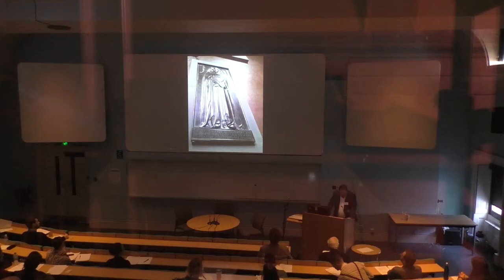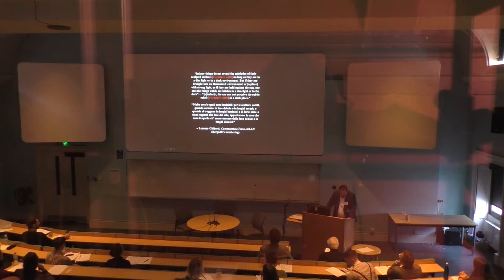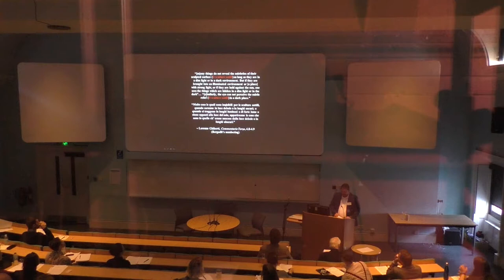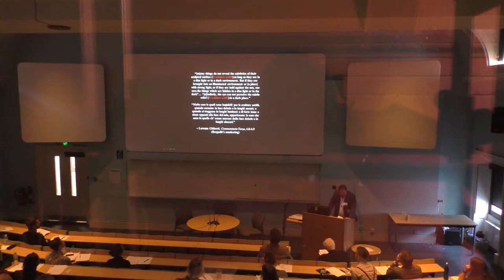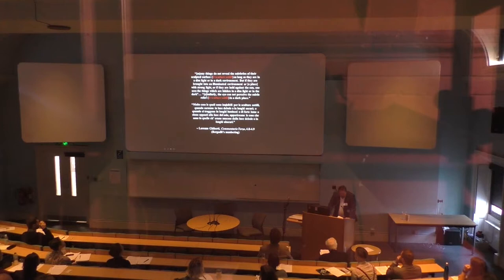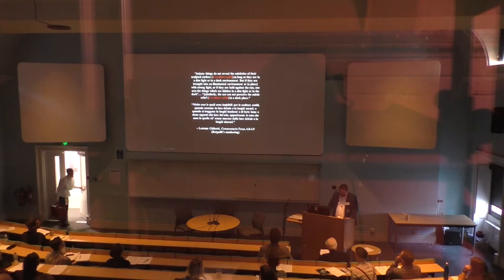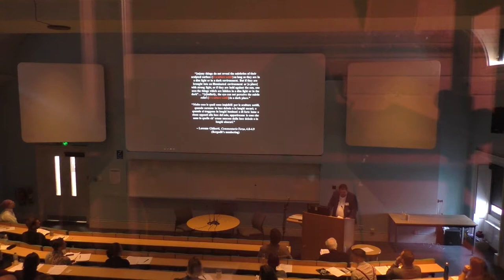For example, Ghiberti claims: 'Many things do not reveal the subtleties of their sculpted surface as long as they are in a dim light or in a dark environment. But if they are brought into an illuminated environment or a place with strong light, or if they are held against the sun, one sees the things which are hidden in the dim light or in the dark.' And similarly: 'The eye cannot perceive the composition of a subtle relief in a dark place — that is to say, it is invisible to human perception.' This phrase, 'le sottili sculture,' appears three other times at the beginning of the third commentary, all in chapters 3, 3.27, 3.36, and 3.27.